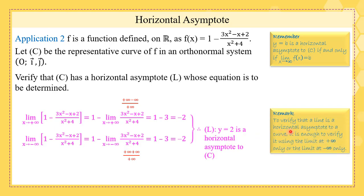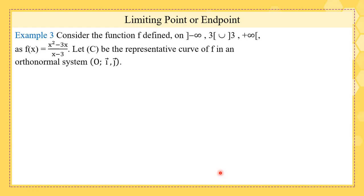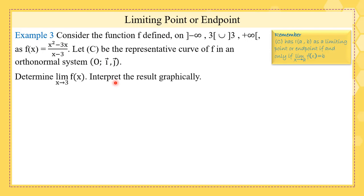It's enough to find the limit at plus infinity alone or at minus infinity. Now what is a limiting point? Remember, the point I with coordinates (a, b) is a limiting point if and only if the limit as x tends to a of f(x) is b. This is a function and the question is to determine the limit of f(x) as x tends to 3 and to give an interpretation of the obtained result.